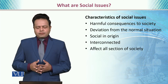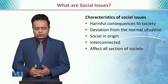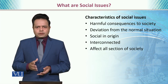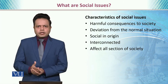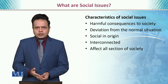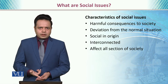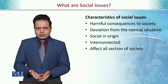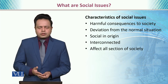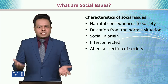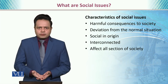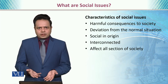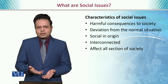If we talk about the characteristics of these social issues, they produce pretty much harmful consequences for society because they stop society from functioning smoothly. Basically, they hamper the development of society and affect the lives of people. Sometimes people get killed, sometimes their dear ones get killed. For example, if we talk about road safety issues, it significantly affects the lives of people. If we talk about terrorism, it also affects the lives of people as they see their loved ones dying in front of them.